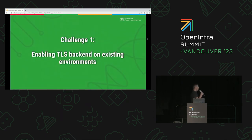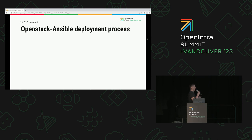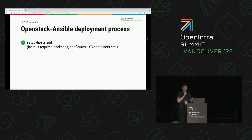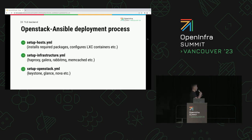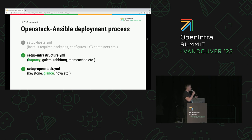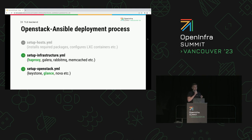Our first challenge is how to enable TLS backend on already existing environments. The OpenStack Ansible deployment process has three main stages: setup host, setup infrastructure where services like databases are configured, and finally deploying OpenStack services. The important point is where HAProxy is configured — during the setup infrastructure stage, all HAProxy services are configured up front. Using Glance as an example, if you want to enable TLS backend on a production environment that doesn't have it yet, you define the variable and proceed to running playbooks.